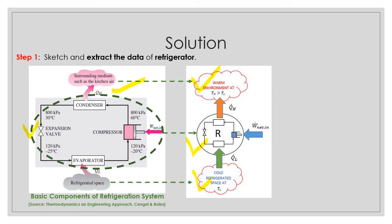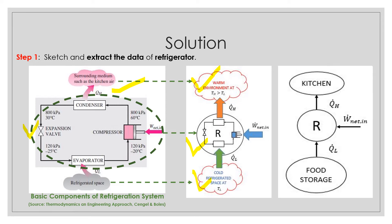We also can simplify until this extent as well, according to the question. Warm environment, in this case, refer to the kitchen. R refers to the refrigeration, which is work net in, and food storage refers to the cold refrigerated space.